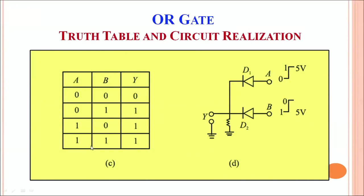Looking at the truth table and the circuit of the OR gate, figure C is the truth table and figure D represents the circuit with the help of diodes. The output Y is measured here and the inputs are provided by terminals A and B. In fact, it is not necessary to have just two inputs. You can have more inputs but the output is always one.